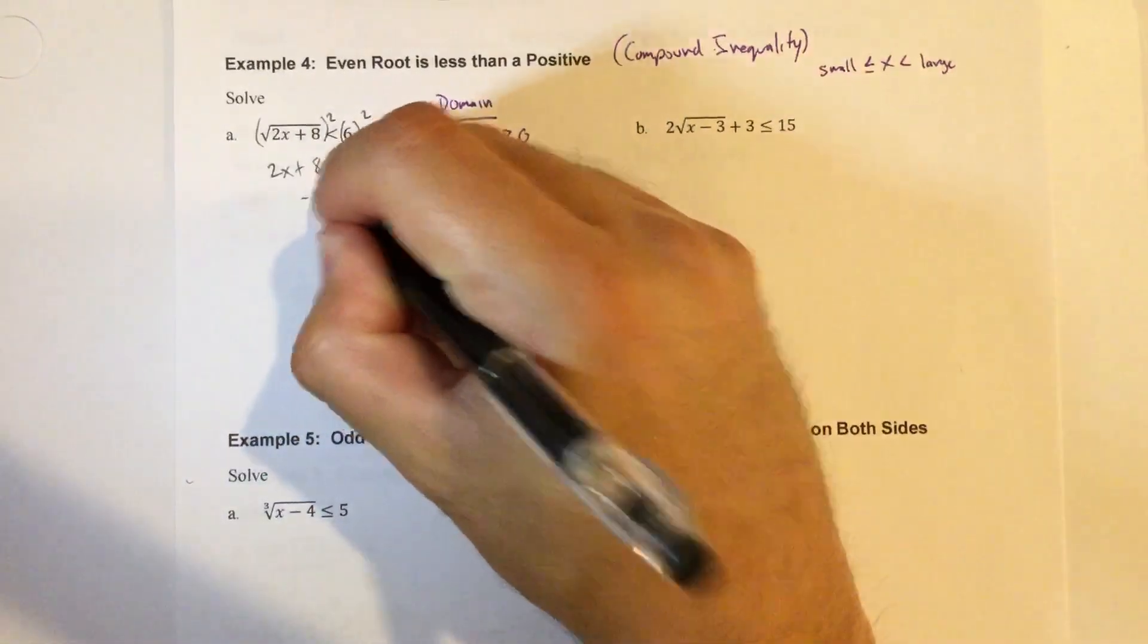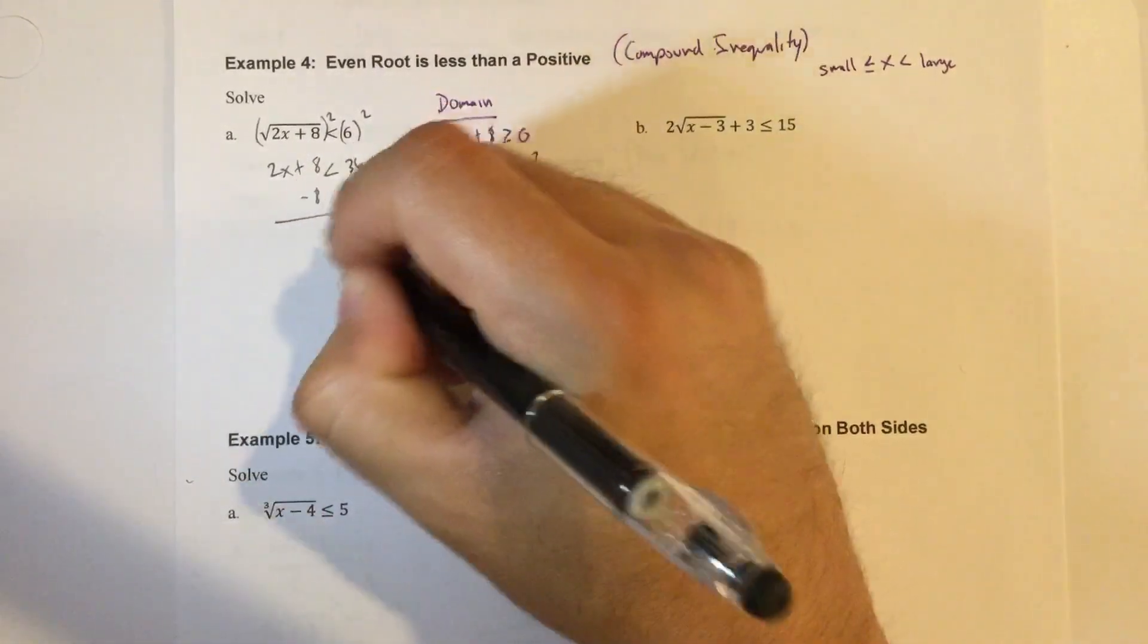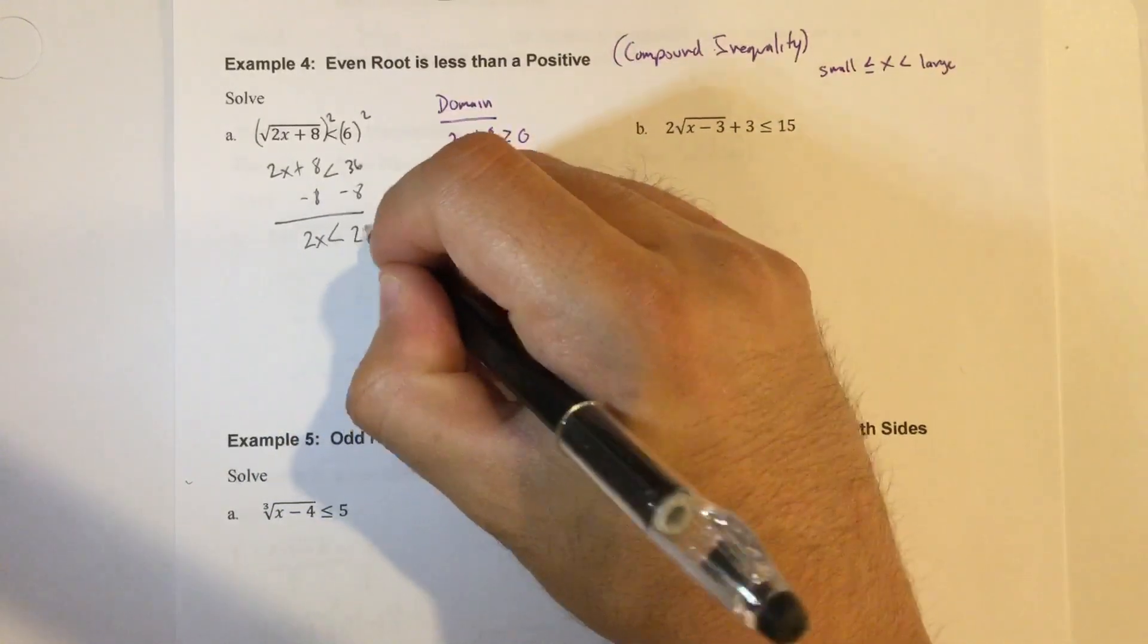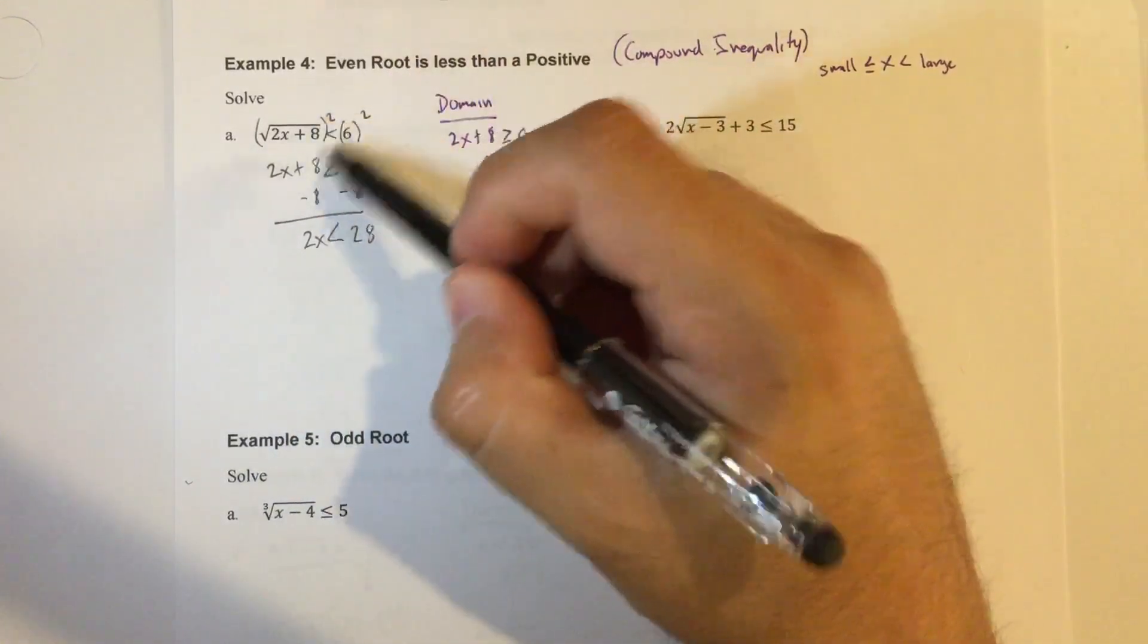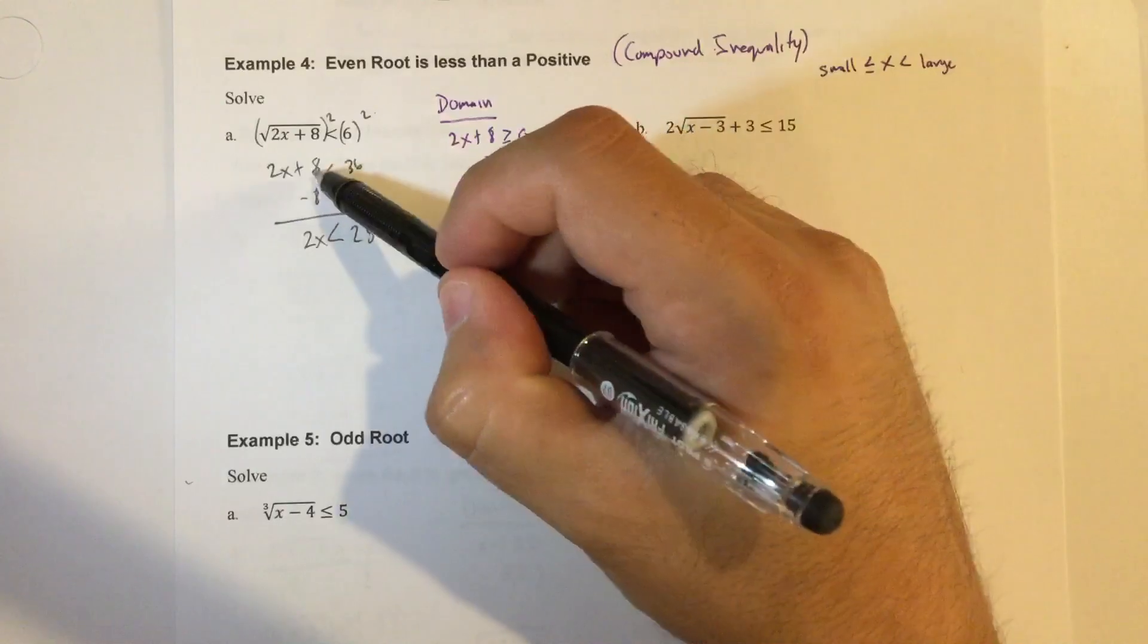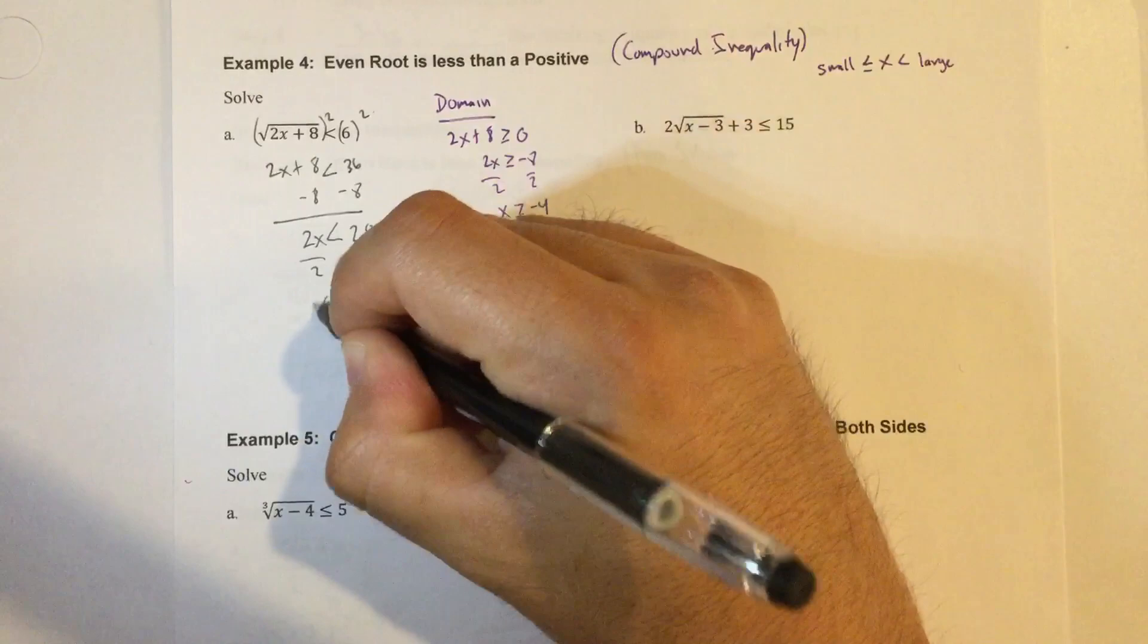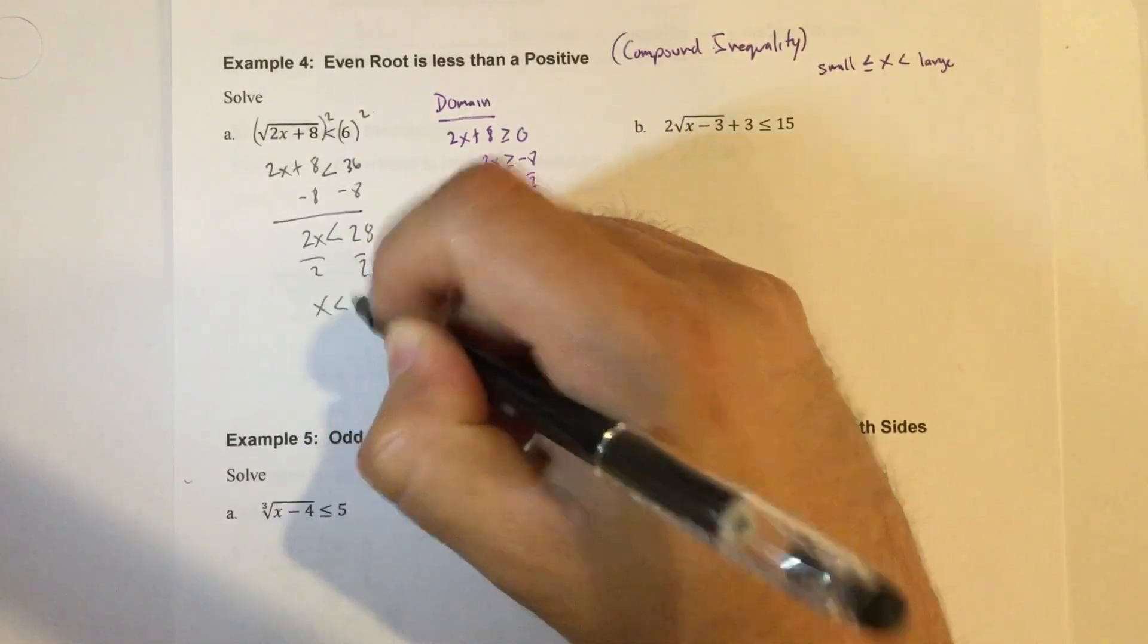To continue solving it, we're going to subtract 8. So 2x is less than, looks like 28. Let's make sure I do this right. Squared, 6 squared is 36, minus 8 is 28. Divide by 2 now. And we get x is less than 14.